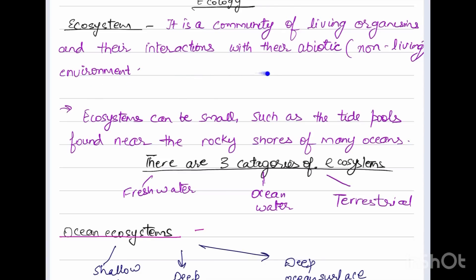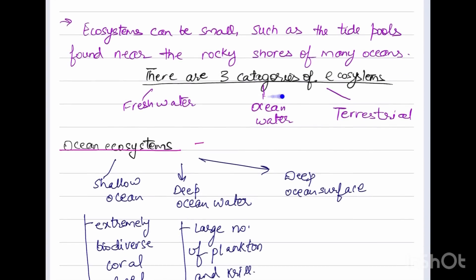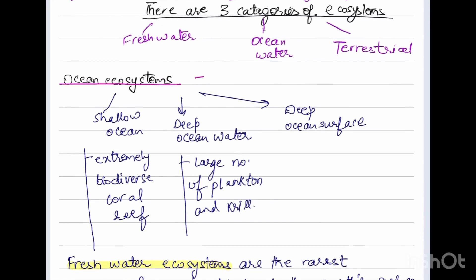Ecosystems can be small in size such as tide pools found near the rocky shores of many oceans, and they can be bigger in size. There are three categories of ecosystem: freshwater, ocean water, and terrestrial. Ocean ecosystems have shallow ocean, deep ocean water, and deep ocean surface.